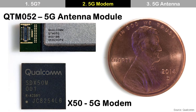There are many enabling technologies which can make 5G possible. For example, antenna, modem, transceiver, RF front-end, filters, and so on. Among them, the 5G modem and 5G antenna are the key elements.